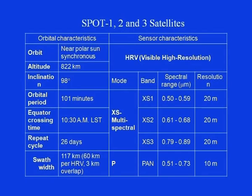Comparing with Landsat, SPOT sensors have higher spatial resolution though spectral ranges are more or less congruent. A new panchromatic mode was introduced, collecting a black-and-white image within the spectral range of 0.51–0.73 µm with a still higher resolution of 10 meters.